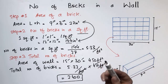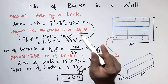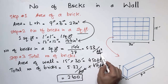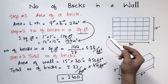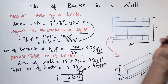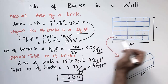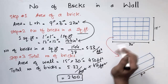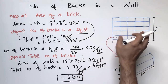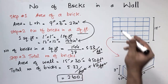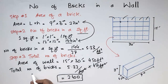To summarize: first, find the area of a brick. Next, find the number of bricks in one square foot — in this example that is 5.33. Then, find the total area of your wall and multiply it by the number of bricks per square foot to get the total number of bricks. In this case we get 2400 bricks.